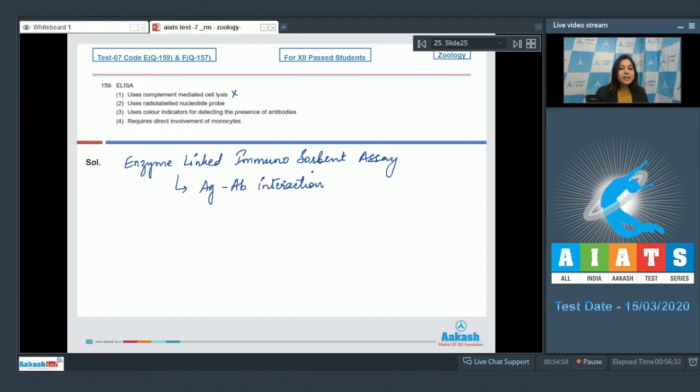Complement mediated cell lysis is a function of cell mediated immunity. Number two, uses radio labeled nucleotide probe. This is also incorrect as nucleotide probes are not used in ELISA as it does not identify the genetic material. Number three, uses color indicators for detecting the presence of antibodies. This is the correct statement as color indicators which are linked with the enzyme are used for detecting the presence of antibodies by the reaction with antigens.